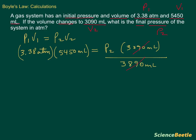But whatever we do to the right-hand side, we have to do the same thing to the left. So we're going to go ahead and divide by 3890 milliliters.